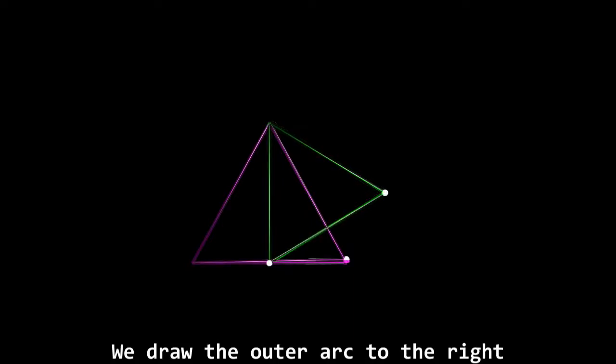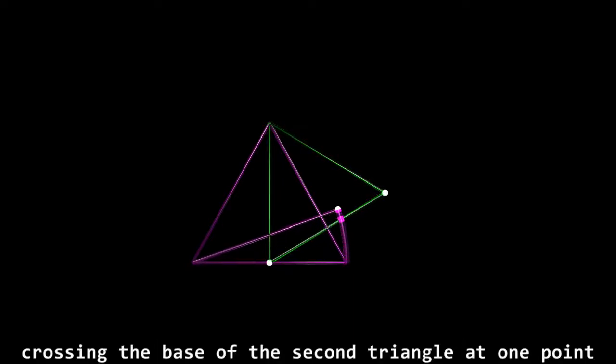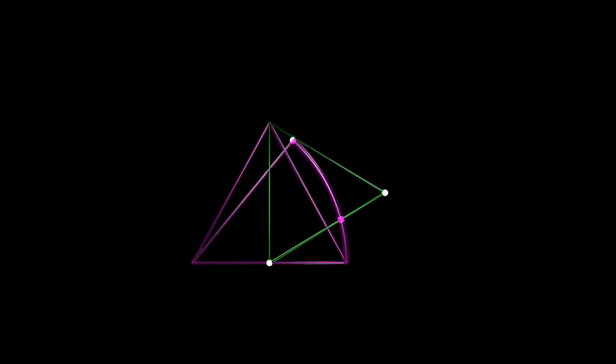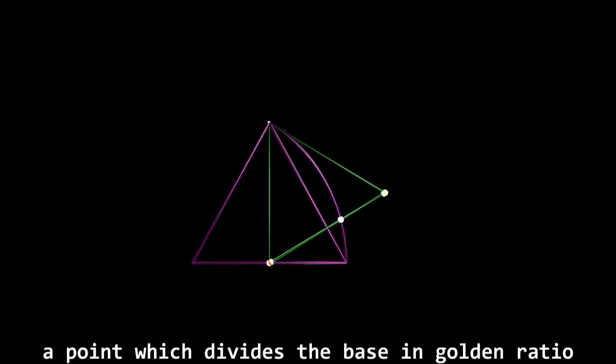We draw the outer arc on right, crossing the base of the second triangle at one point. A point which divides the base in golden ratio.